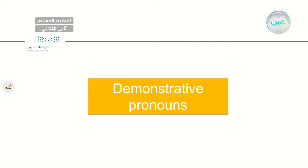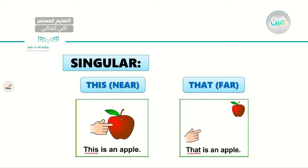Have your books ready at page 19, my dear student. We will be talking about demonstrative pronouns. What do we mean by demonstrative pronouns, and why do we use them? We will be focusing first on the singular — this and that. How many apples do you see in the first box? We can see one apple — it is singular. In the second picture, I can also see only one apple, so both pictures show just one apple — singular.